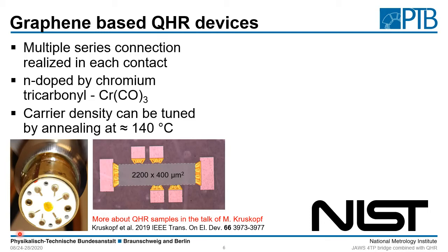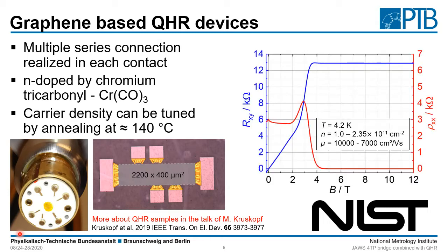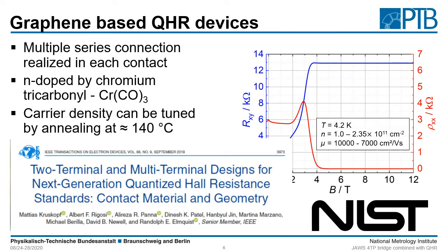This plot shows an overview measurement of the sample. You can see that at a field of about 5 Tesla the quantum hall value is reached and the longitudinal resistance vanishes. If you are interested more in this type of quantum hall device, I recommend the talk of Matthias Kruskopf and also the recently published paper by Matthias Kruskopf and colleagues.